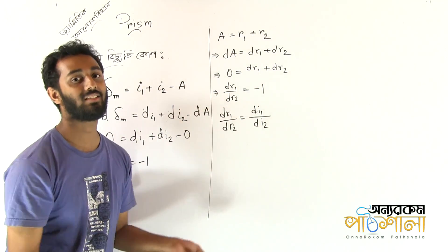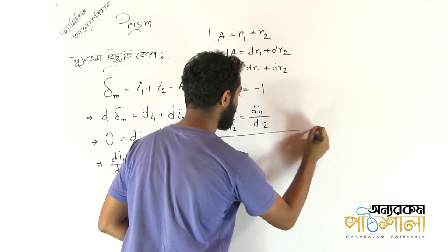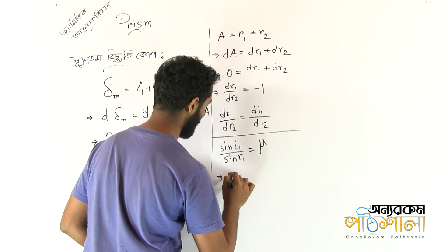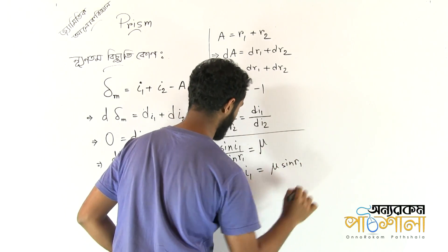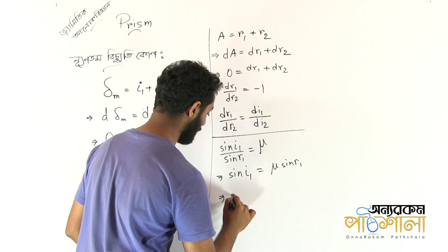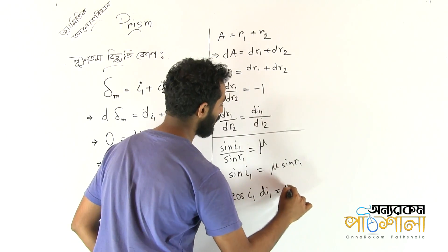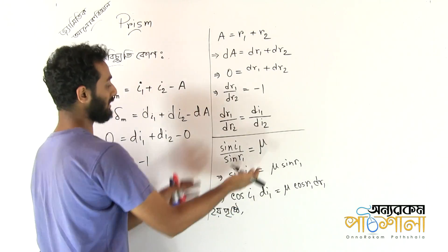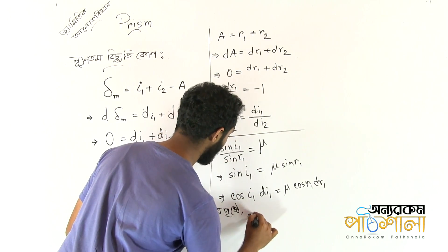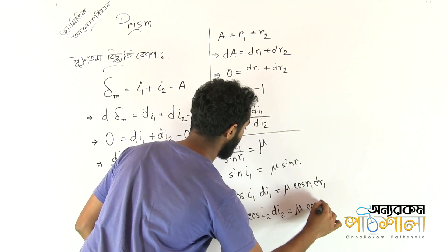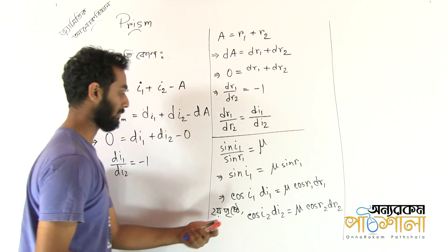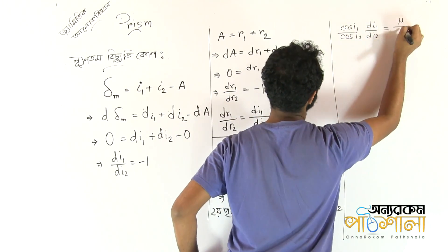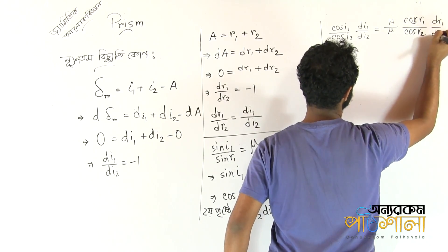At the first surface of the prism: sin(i1) by sin(r1) equals μ, so sin(i1) equals μ·sin(r1). Differentiating: cos(i1)·dI1 equals μ·cos(r1)·dr1. Similarly at the second surface: cos(i2)·dI2 equals μ·cos(r2)·dr2. Dividing these two equations: cos(i1) by cos(i2) times dI1 by dI2 equals cos(r1) by cos(r2) times dr1 by dr2.